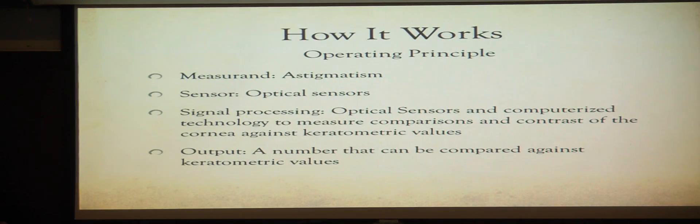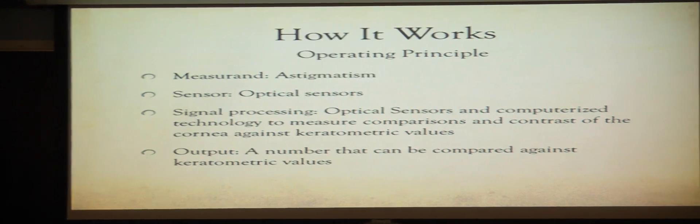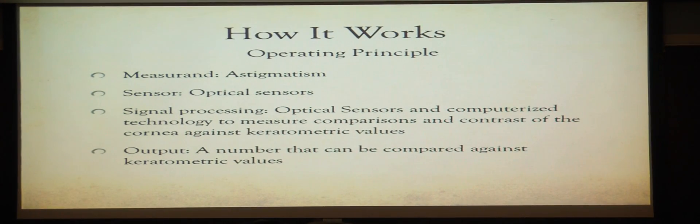How it works to measure the extent of astigmatism: the sensors are optical sensors, and the signal processing is that optical sensors and computerized technology are used to make comparisons and contrasts between the cornea against pre-known values. The keratometer actually provides a certain number, and optometrists can use this number so they'll know what the cutoff is for a normal eye versus one affected by astigmatism, and they can also determine the extent of astigmatism.